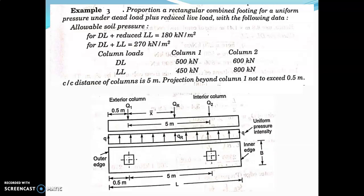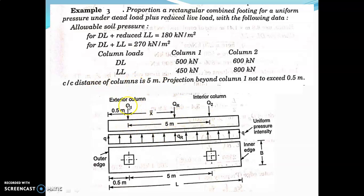Designing a rectangular combined footing means you have to find the dimensions L and B. You can see here this is a combined rectangular footing — two columns are provided. This is column 1 and this is column 2; column 2 is the interior column and column 1 is the exterior column. This is the outer edge and this is the inner edge. The center to center distance of the columns is 5 meter.